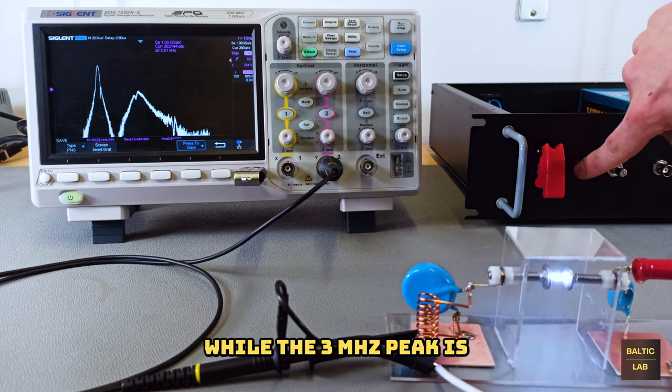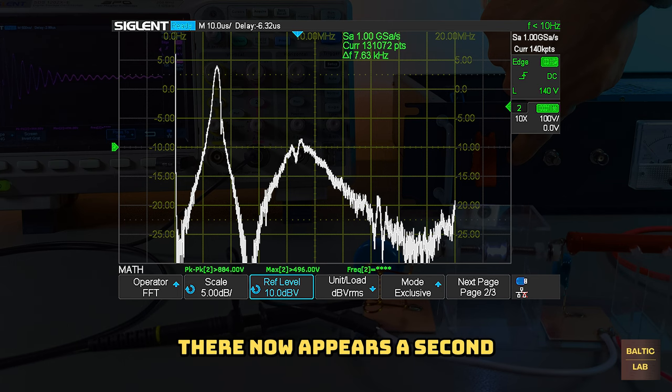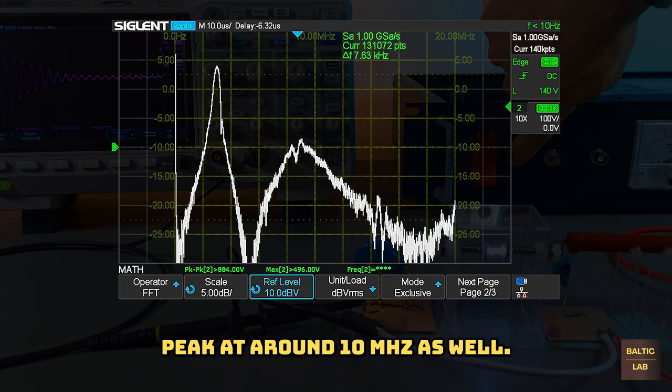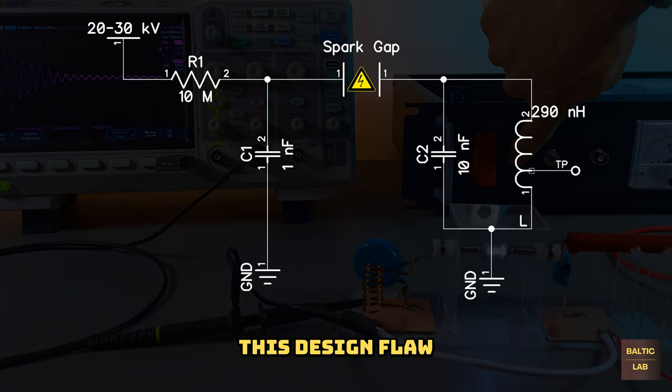While the 3 megahertz peak is certainly the strongest, there now appears a second peak at around 10 megahertz as well. The source of this design flaw is, as in many cases, this nasty thing called reality.